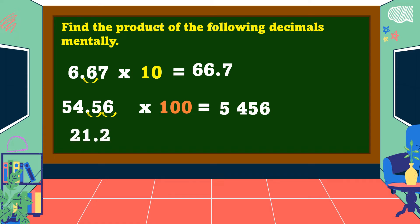Another example: twenty-one and two-tenths times one-hundred. We're going to move the decimal point two places going to the right. Since there is only one digit at the right of the decimal point and we need to move the decimal point two places to the right, we will add one zero in our product. Therefore, the answer is equal to two-thousand-one-hundred.